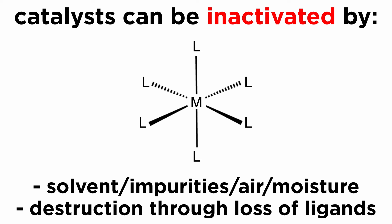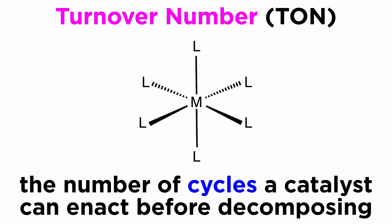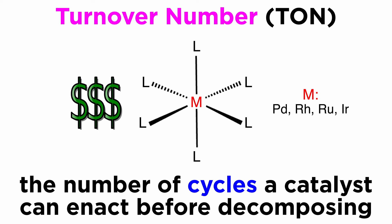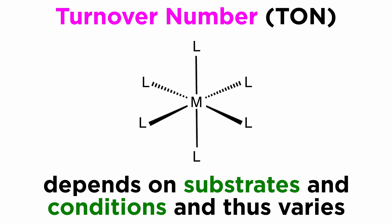Therefore, the chemist endeavors to reduce or eliminate these unwanted processes. The number of cycles the catalyst can enact before decomposing is called turnover number, abbreviated as TON, and it is clear that chemists will always look for high-TON catalysts, because these catalysts may contain precious metals like palladium, rhodium, ruthenium, or iridium, plus costly ligands, and they are very expensive. The TON depends on substrates and conditions, so a catalyst can have widely different TON in different reactions.